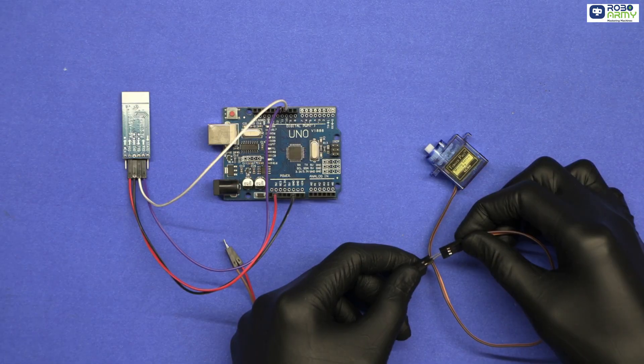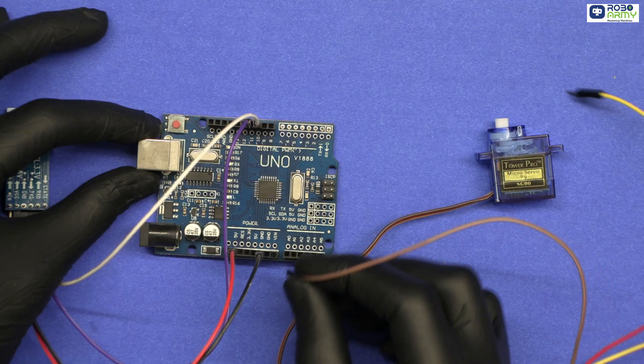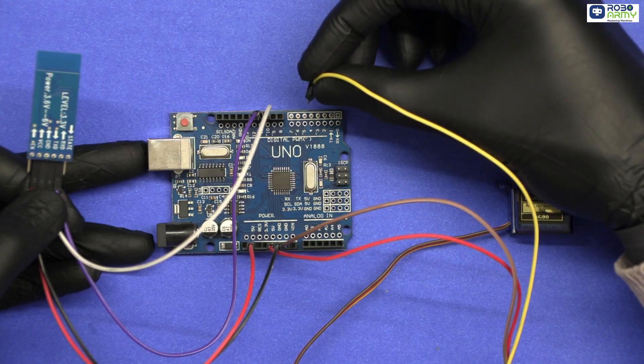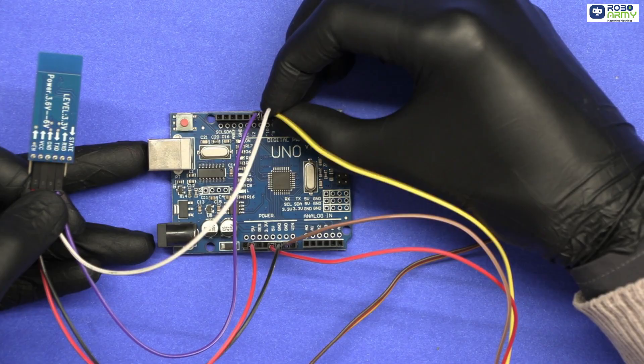Take the servo motor and connect male-to-male jumper wires in it. Connect the brown wire to the GND pin of the Arduino. Connect its red wire to 5V pin. And then connect the orange wire to digital pin 9 on the Arduino.